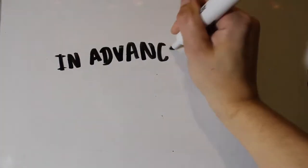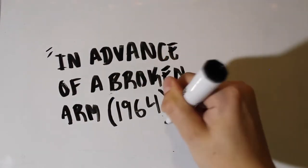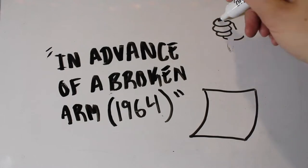This highly debated art piece is called In Advance of a Broken Arm, made in 1964 by Marcel Duchamp. This snow shovel was purchased from a store and placed into a museum.